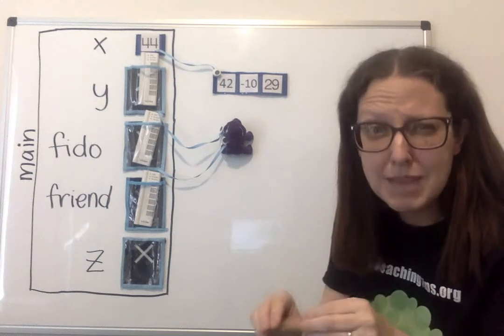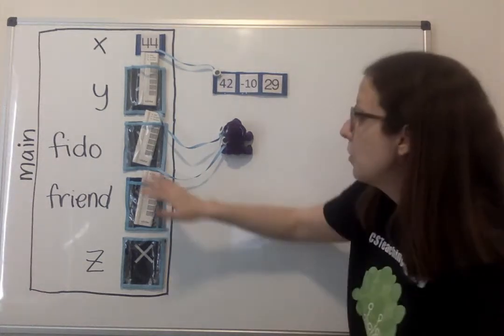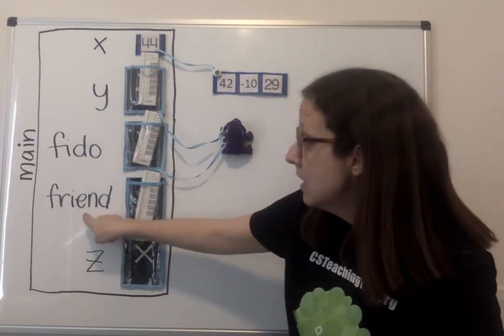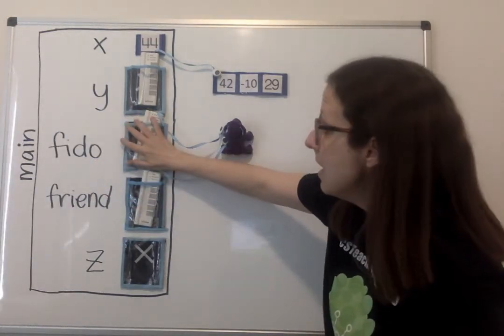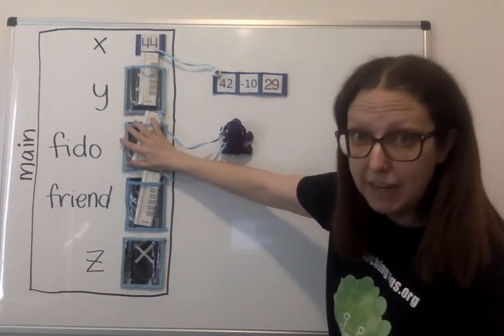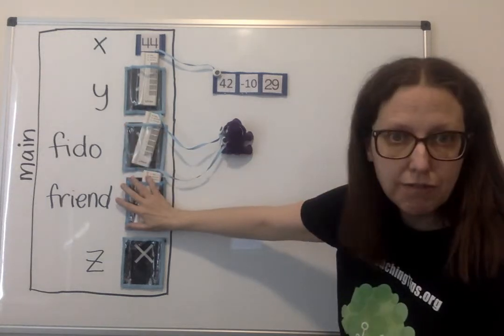And I get to do the exact same thing when I'm talking about references. So if I assigned friend to reference the same thing FIDO does, then I take a copy of the value of the variable FIDO, a copy of that reference, and I put it in friend.